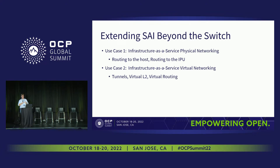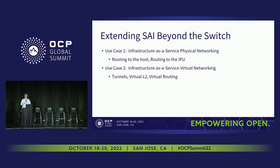The thought comes: does it make sense to extend SAI beyond just managing a switch? The two use cases we're throwing out here are infrastructure as a service for physical networking — if you have a host with multiple NICs, more and more people are running routing protocols on the host itself and doing ECMP-style decisions on which NIC to use. Second, you might have a virtual network where you want to do tunneling to prevent connectivity between hosts that aren't allowed to talk to each other.